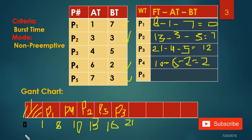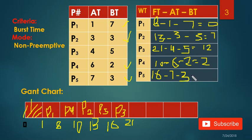For P5, the finishing time is 16, arrival time is 7, and burst time is 3 — so 16 minus 7 minus 3 equals 6.